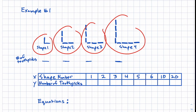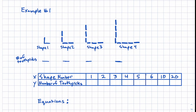If we look right here at our example, we can see we've got a couple of different shapes made of toothpicks. We've got shape one, shape two, shape three, and shape four. Shape one has two toothpicks. Shape two has four. Shape three has six. And shape four has four on the top and four on the right, making eight in total.